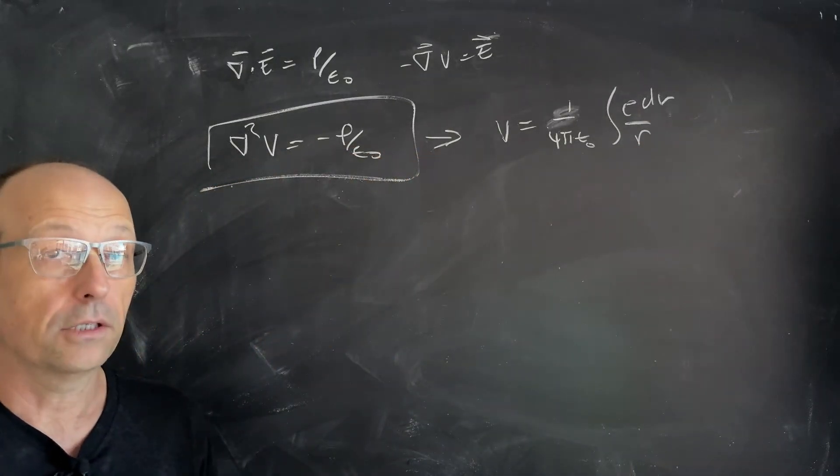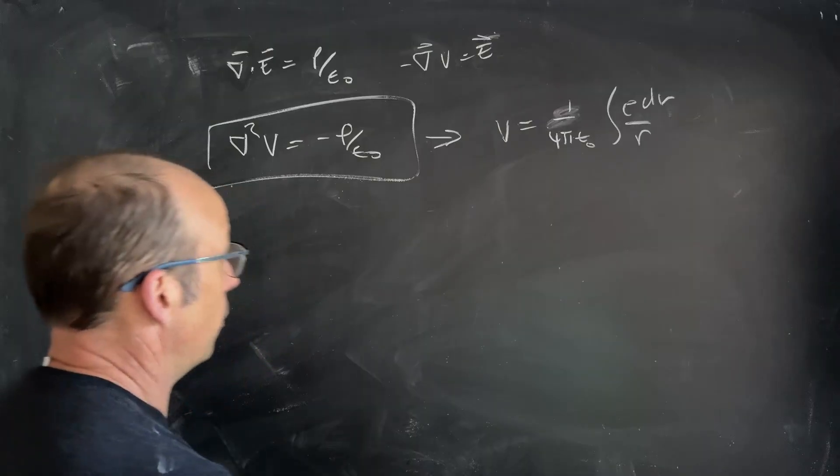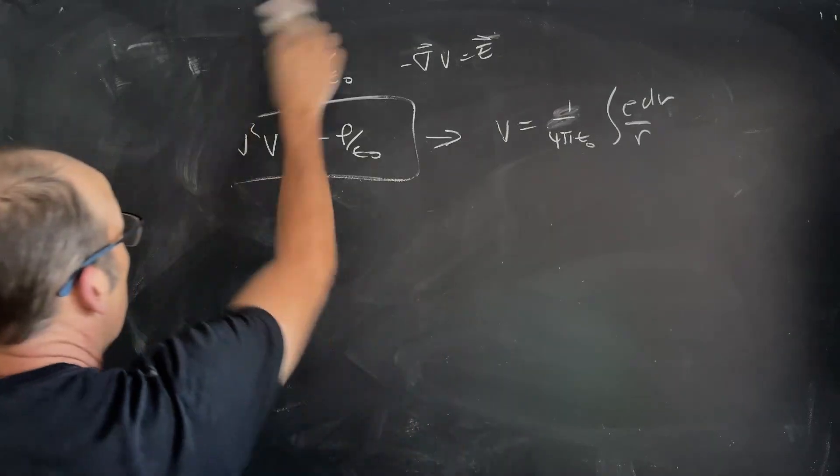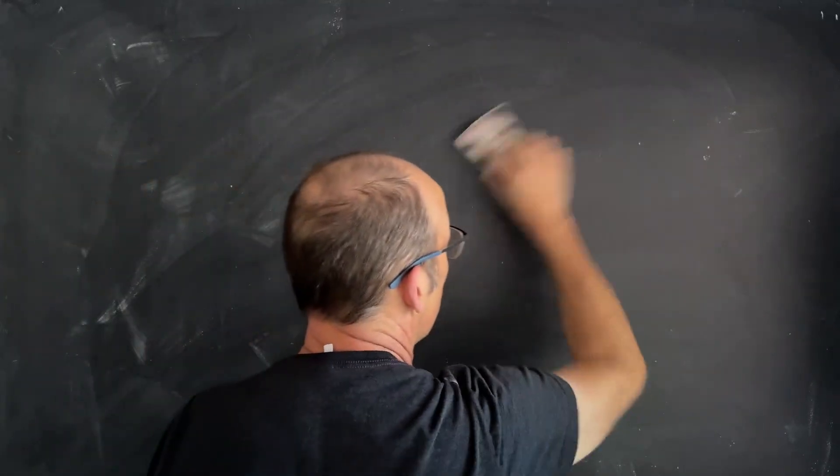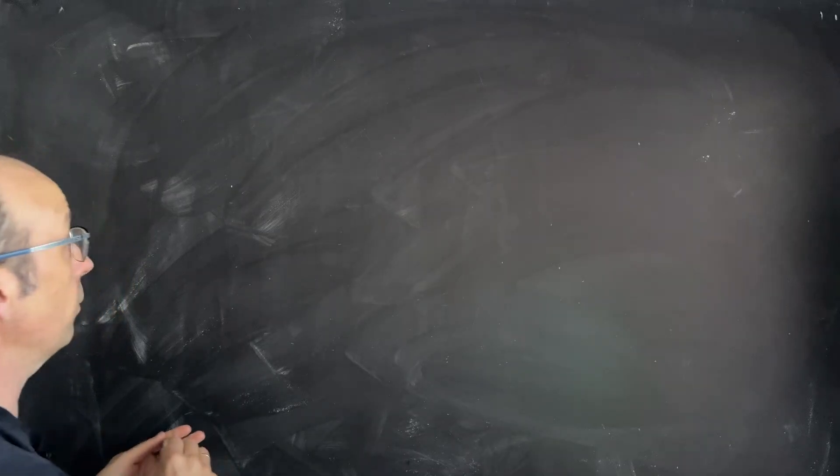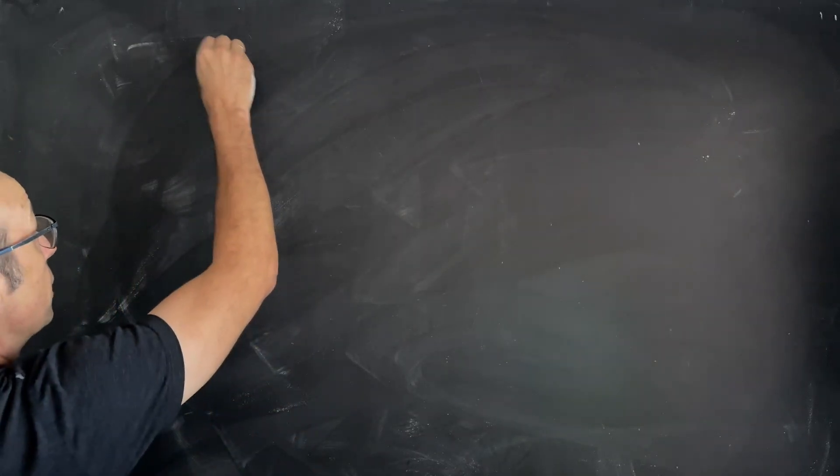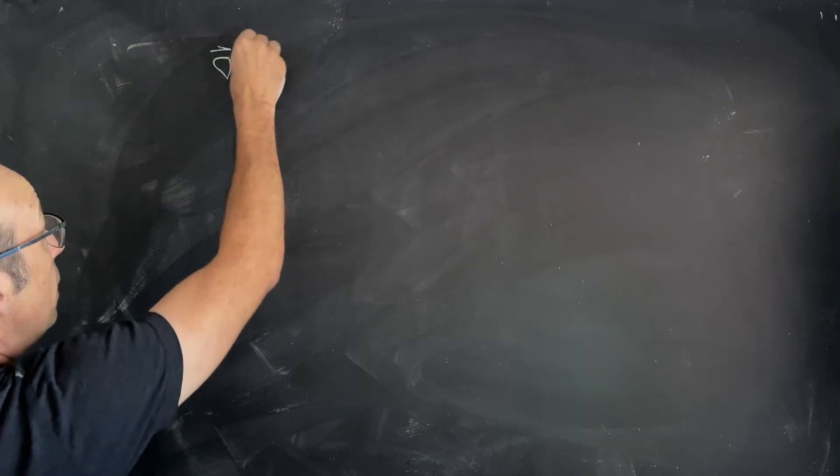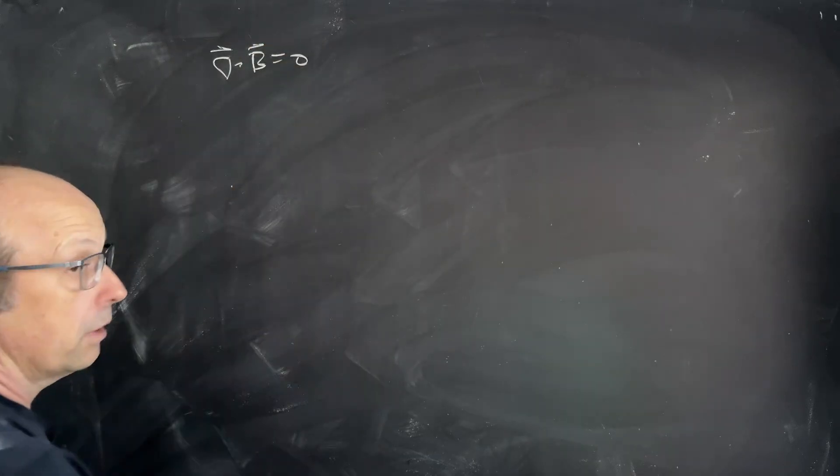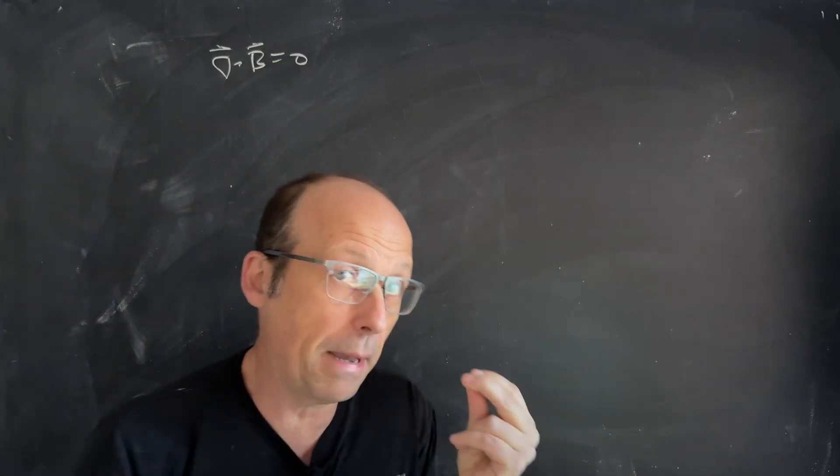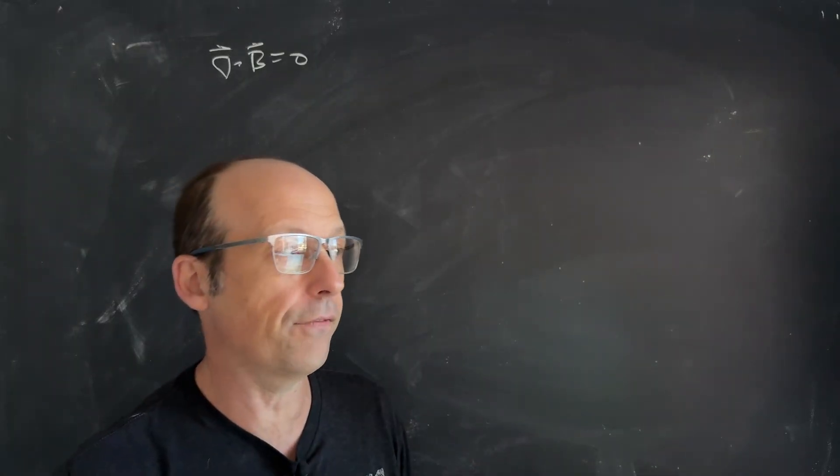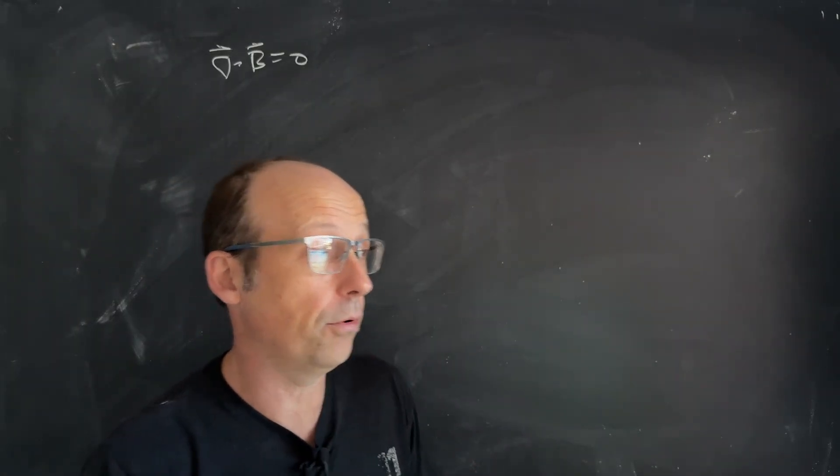Okay. So, that was a review of electric potential. Now, let's jump over to the magnetic field. So, in the magnetic field, we have two important identities. The first is this. Del dot B is zero. This says that the divergence of the magnetic field is zero. This is Gauss's Law for the magnetic fields. It says there's no magnetic monopoles.